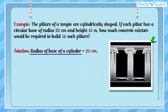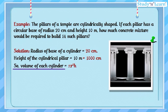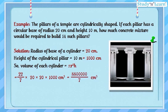Radius of base of the cylinder is equal to 20 centimeters. Height of the cylindrical pillar is equal to 10 meters, which is equal to 1000 centimeters. So volume of each cylinder is equal to pi r square h, that is 22 upon 7 into 20 into 20 into 1000 cubic centimeters, which gives 88 lakh upon 7 cubic centimeters, or 8.8 upon 7 cubic meters.